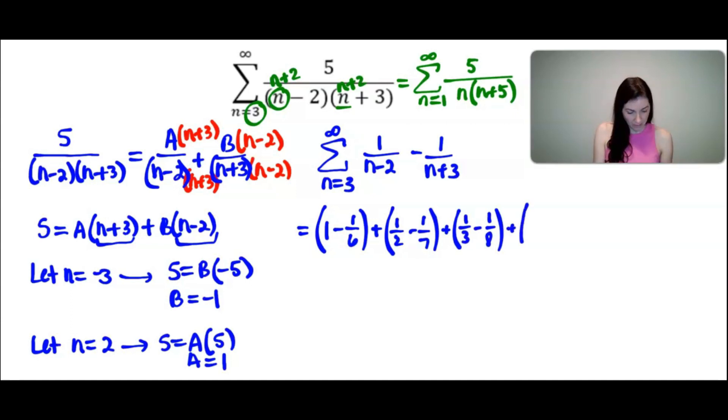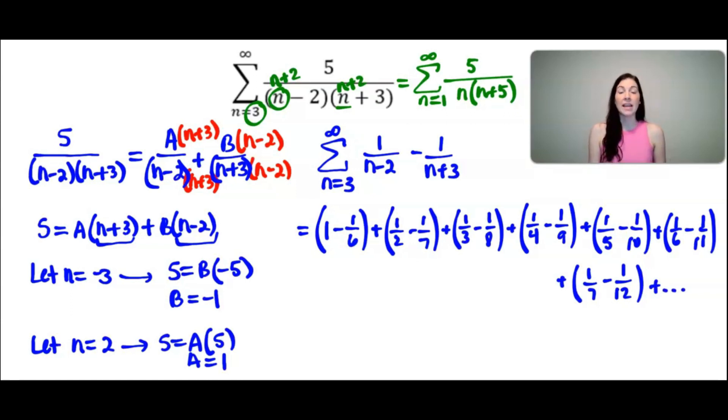Still nothing. Let's do 6. 1 over 6 minus 2 is 1/4 minus 1/9. Still don't see anything cancel, but just wait. It's coming. So then plus, I think I'm on 7. So 1 over 7 minus 2 and then minus 1/10. Still nothing. Let's plug in 8. 1 over 8 minus 2, 1/6 minus 1 over 11. And this is where I'm finally noticing something. Let me just carry out one more so we can see what's happening. So 9, 1 over 9 minus 2 is 1/7 minus 1 over 12. And then I would keep going an infinite amount of times.